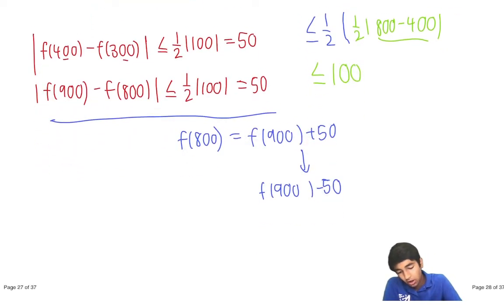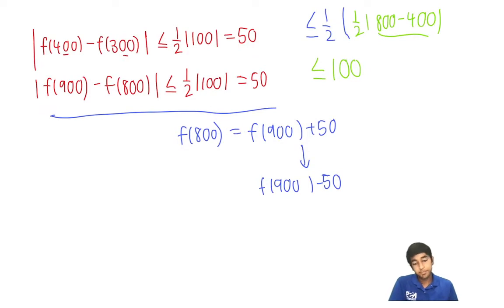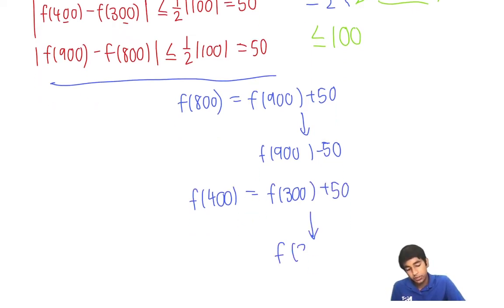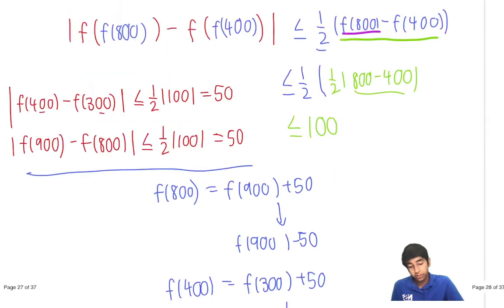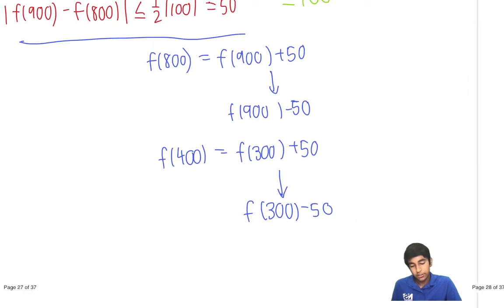And then we also have that f(400) equals f(300) plus 50 to minus 50. And again, it can be anything in this range. We don't know what it is. It does not necessarily have to be an integer. It's just something in this range.